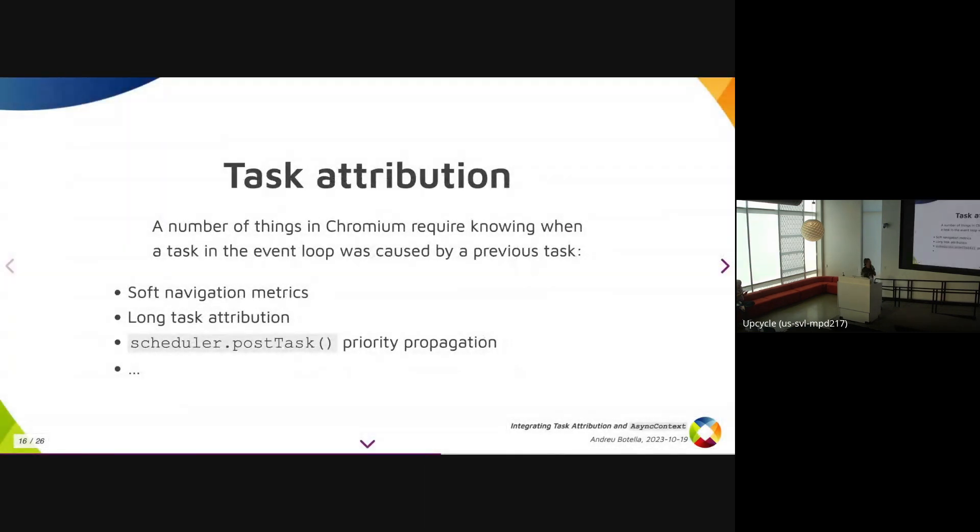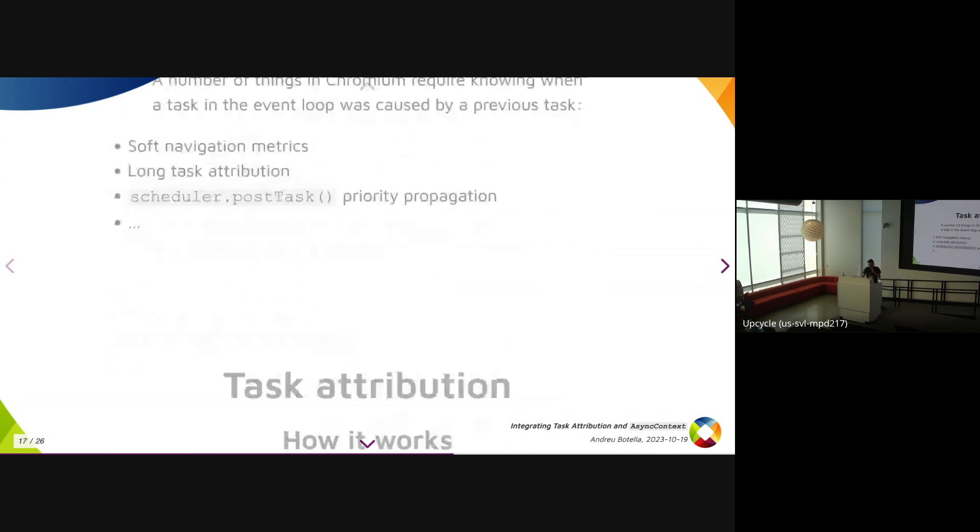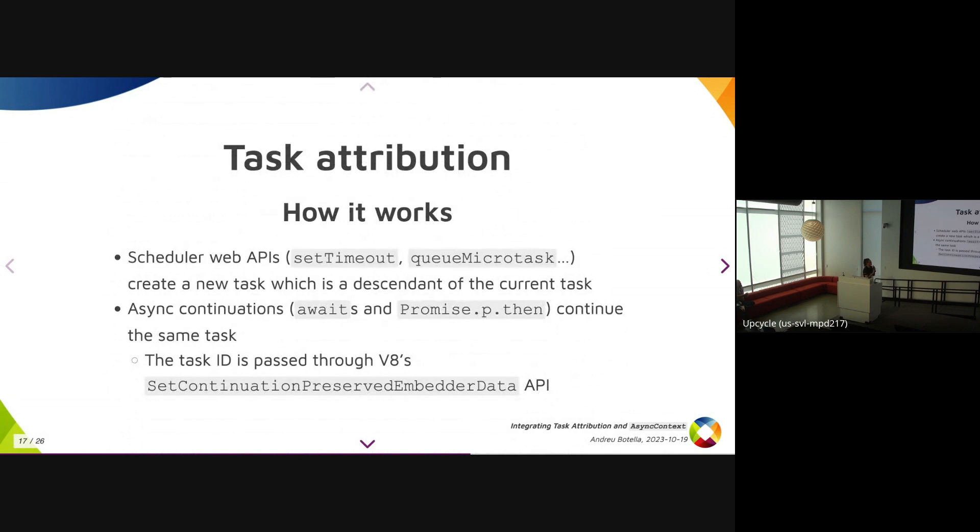If this sounds familiar, especially if you were attending BlinkOn last year, whether virtually or in that building over there, this is very similar to what Yoav was discussing in his task attribution talk. So let's talk about task attribution. There are a number of things in Chromium and in the web in general that require knowing when a task in the event loop was actually caused by some previous task. There's soft navigation metrics. We'll talk about those briefly later. There's long task attribution, priority propagation in scheduling.